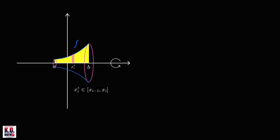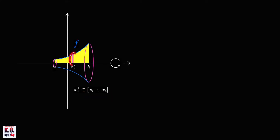We're going to approximate this region using n rectangles by dividing the interval a, b into n subintervals. The ith rectangle has height determined by x sub i star in the ith interval. We revolve this rectangle about the x-axis to generate a right circular cylinder.